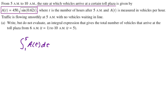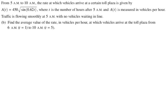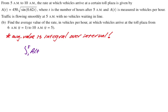Part B: Find the average value of the rate in vehicles per hour at which vehicles arrive at the toll plaza from t equals 1 to t equals 5. So the average value in general is integral over interval. We're going to do the integral of the function that gives us the rate divided by the interval on which we're searching, which is from 1 to 5. So that's going to be the integral from 1 to 5 of A(t) dt, divided by 5 minus 1.